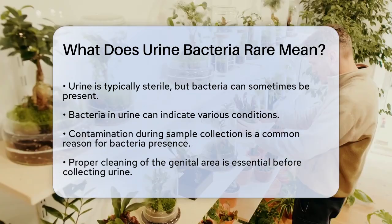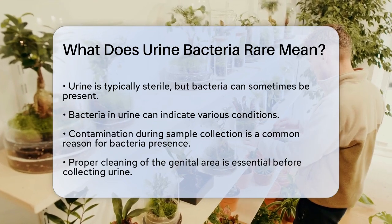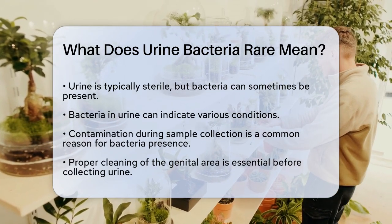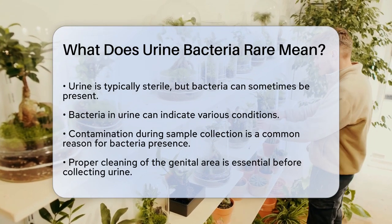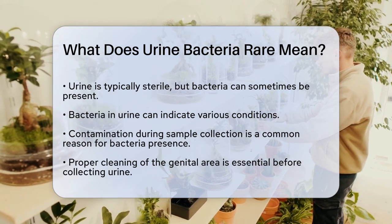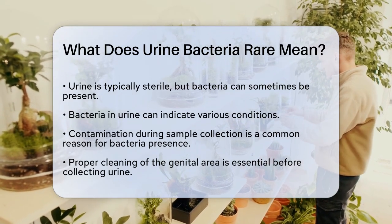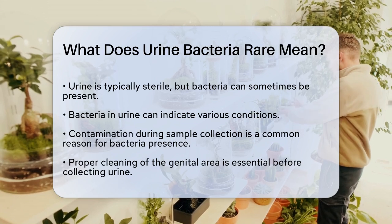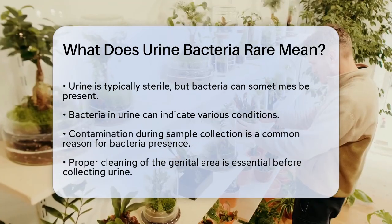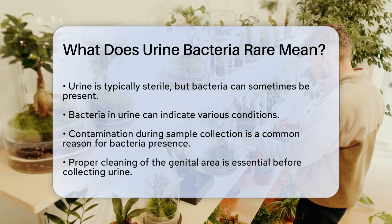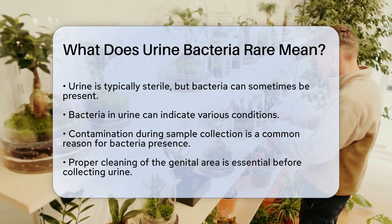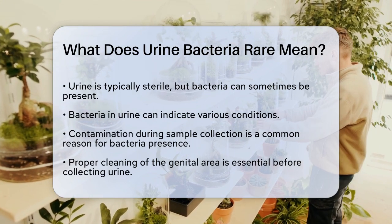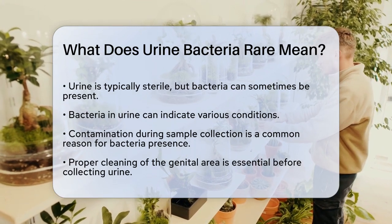First, it's important to understand that urine is usually sterile, meaning it doesn't typically contain bacteria. However, there are instances where bacteria can be present. Contamination: one common reason for finding bacteria in urine is contamination during the collection process. If the genital area isn't properly cleaned before taking the sample, or if the first stream of urine isn't discarded, bacteria from the skin can end up in the sample.